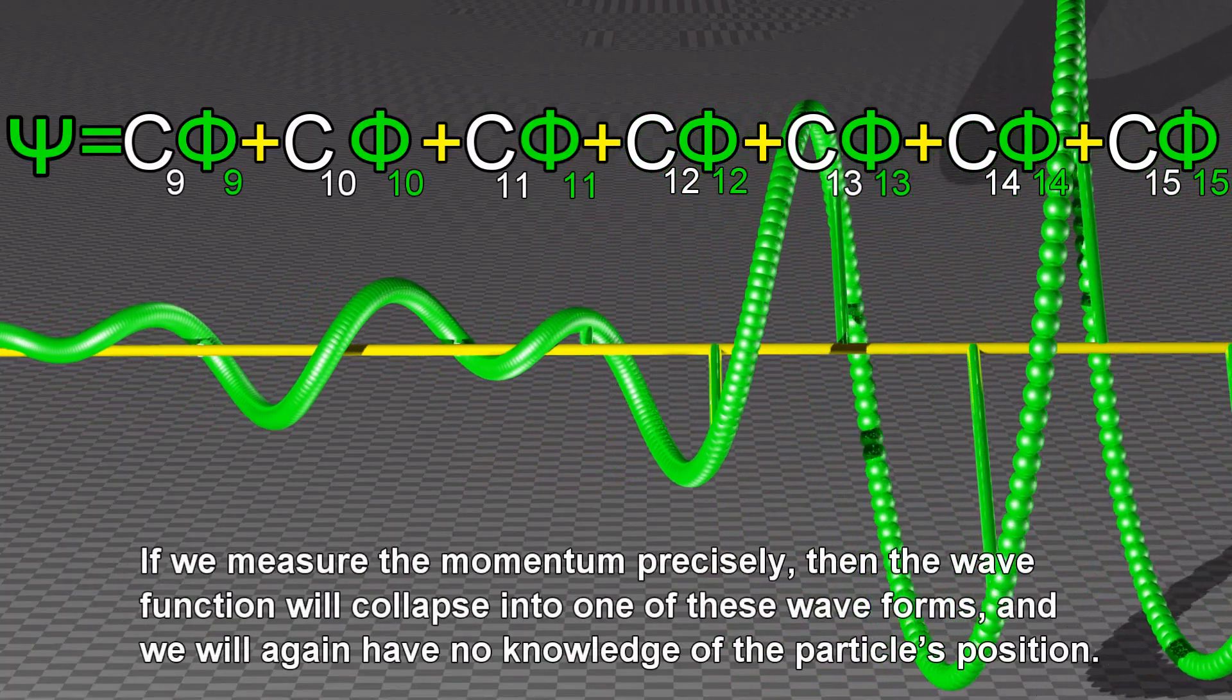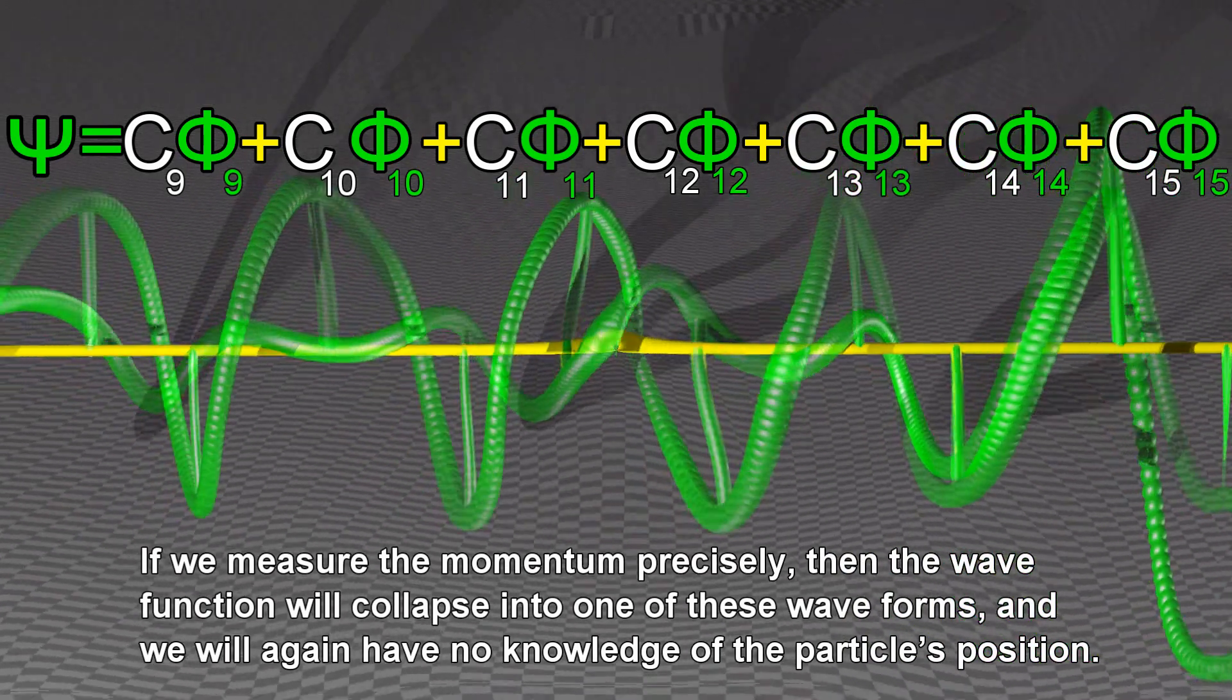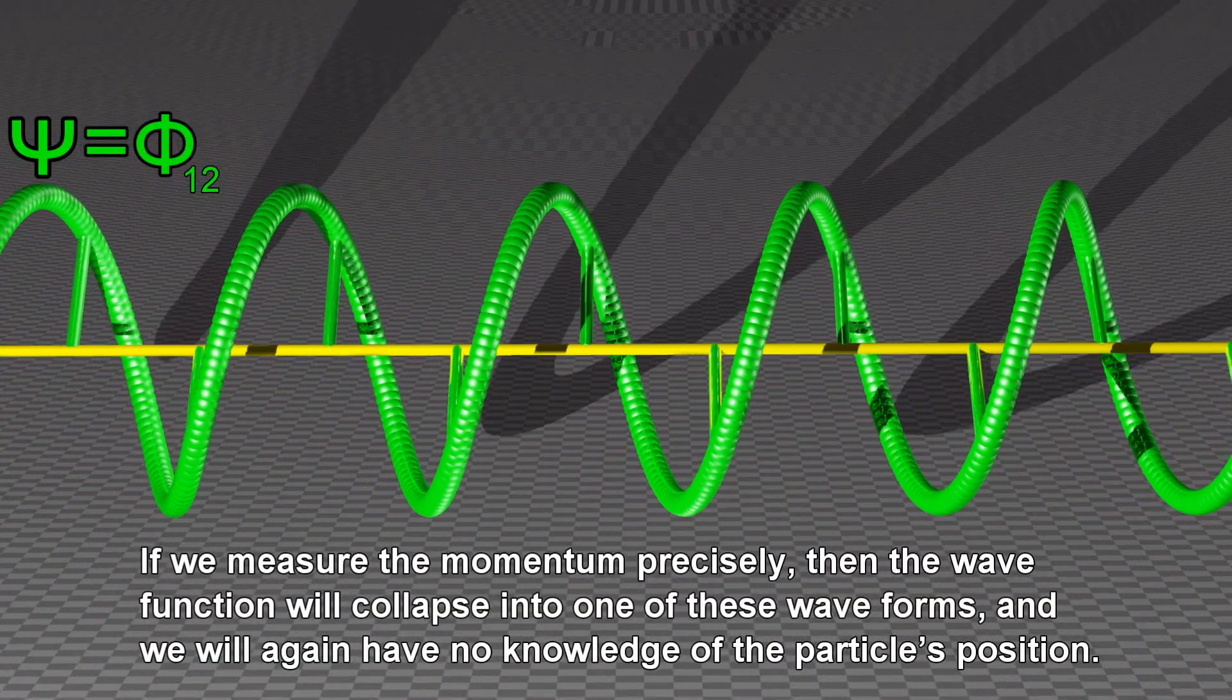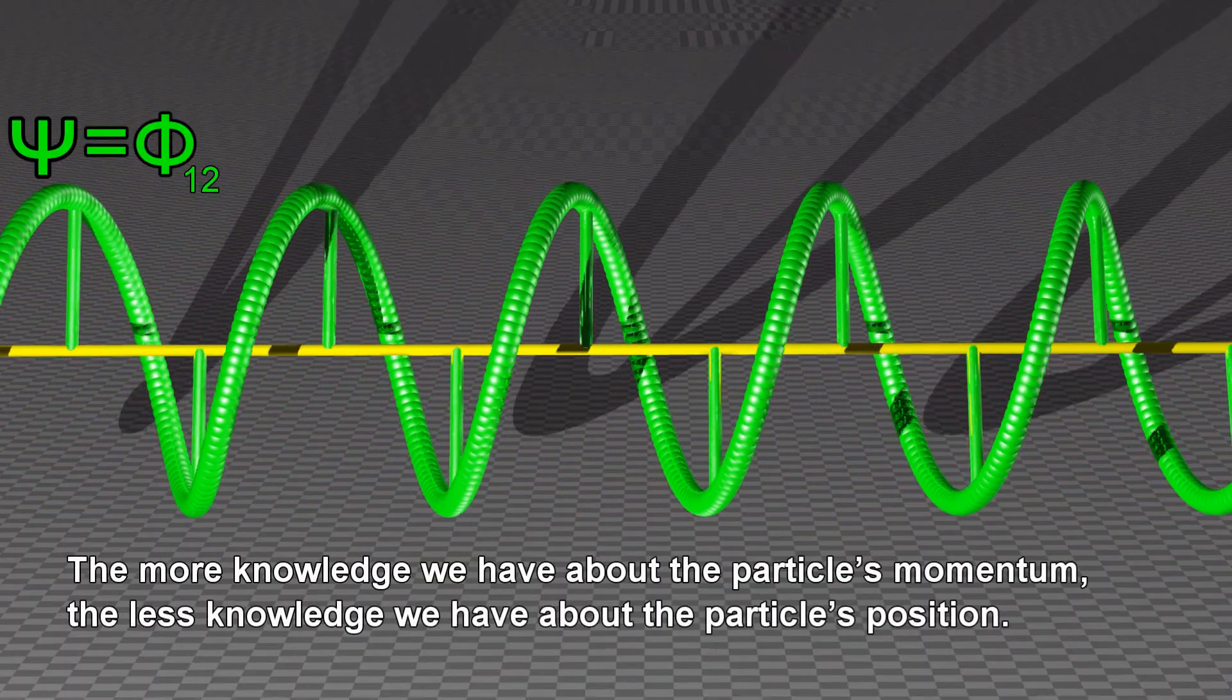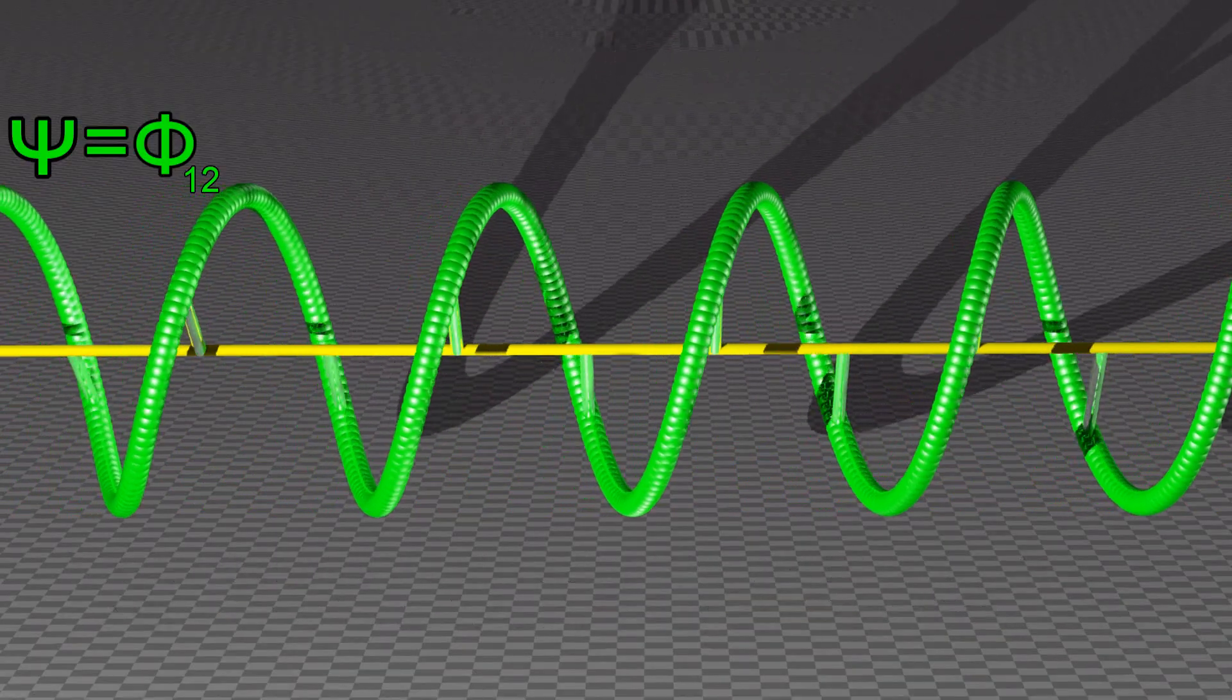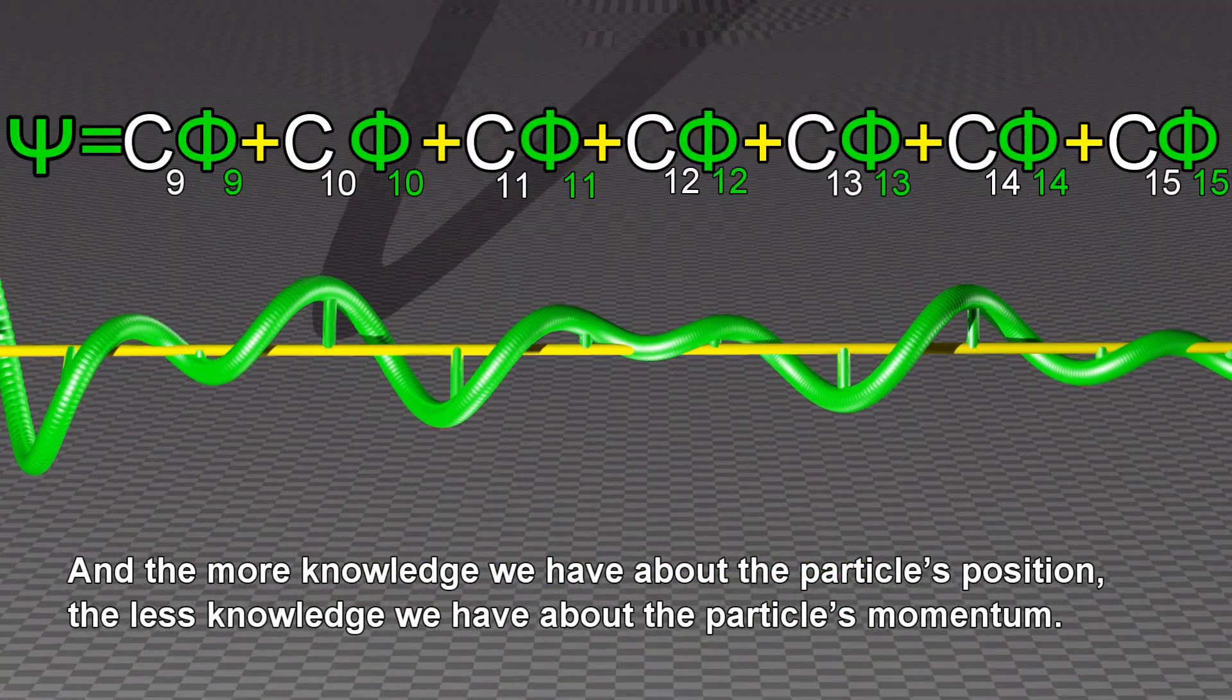If we measure the momentum precisely, then the wave function will collapse into one of these waveforms, and we will again have no knowledge of the particle's position. The more knowledge we have about the particle's momentum, the less knowledge we have about the particle's position, and the less knowledge we have about the particle's momentum.